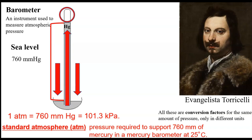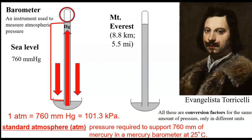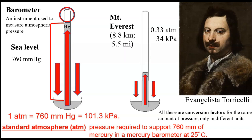These are all conversion factors for the same amount of pressure, just in different units. It's useful to compare two extremes: sea level and Mount Everest. At the top of Mount Everest, which is 8.8 kilometers high, you have only about a third of an atmosphere — much less atmospheric pressure pushing down — so you get a much lower mercury column reading.